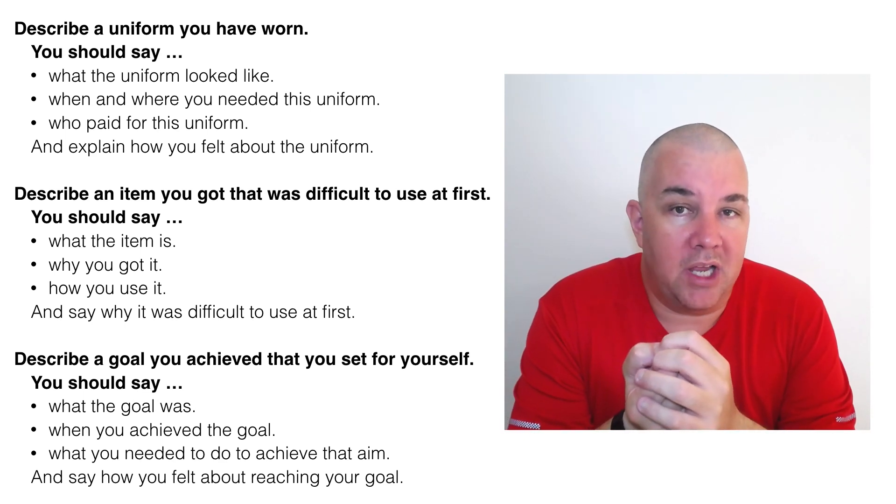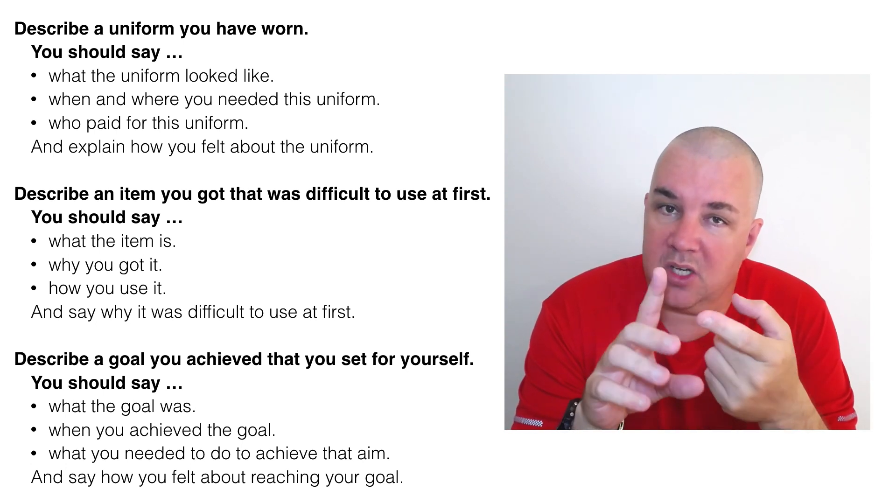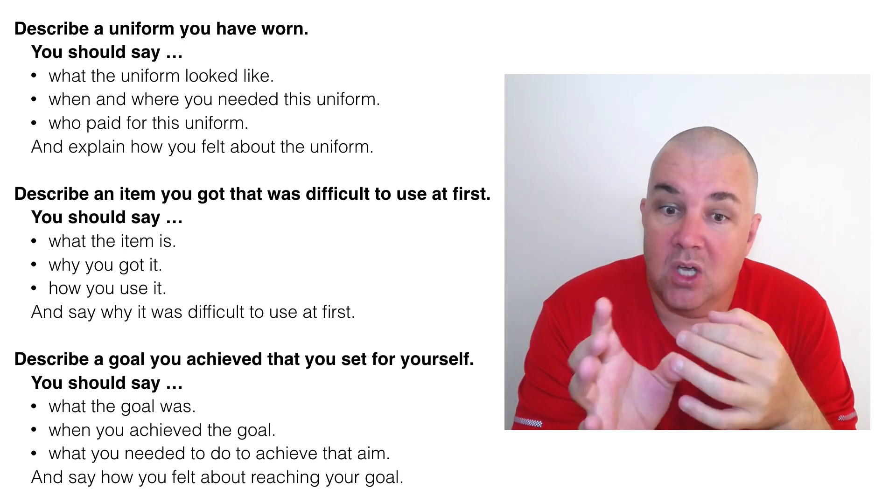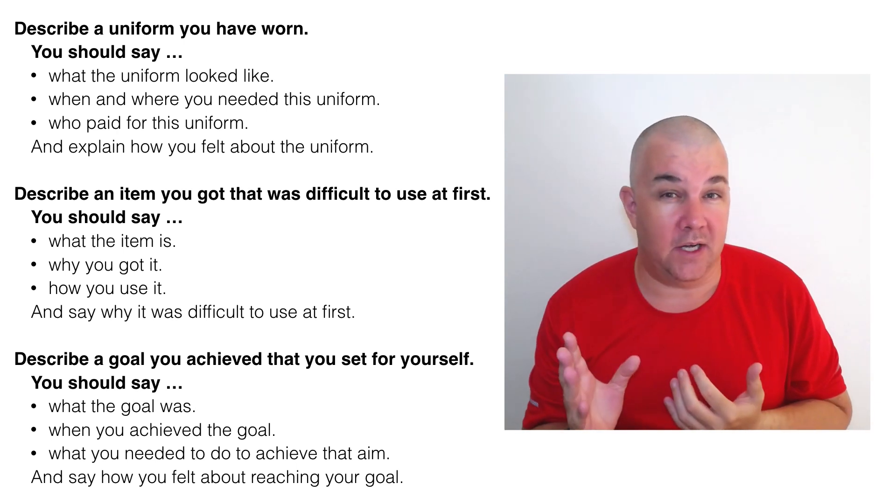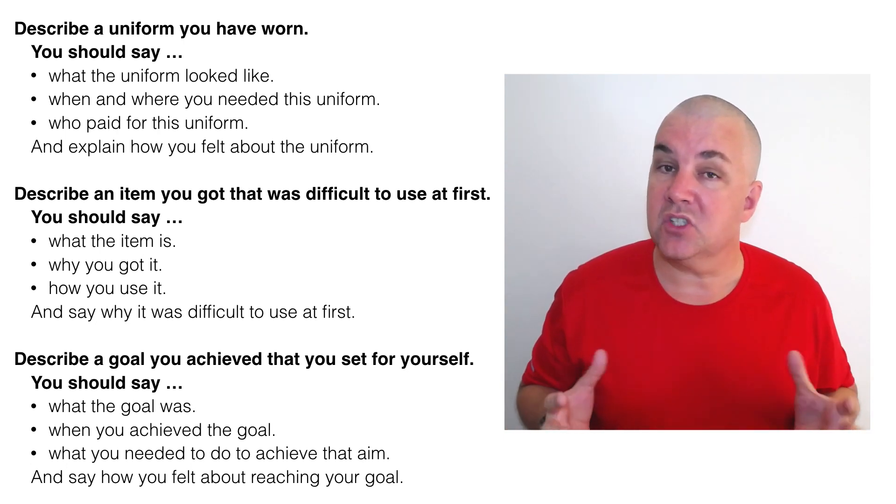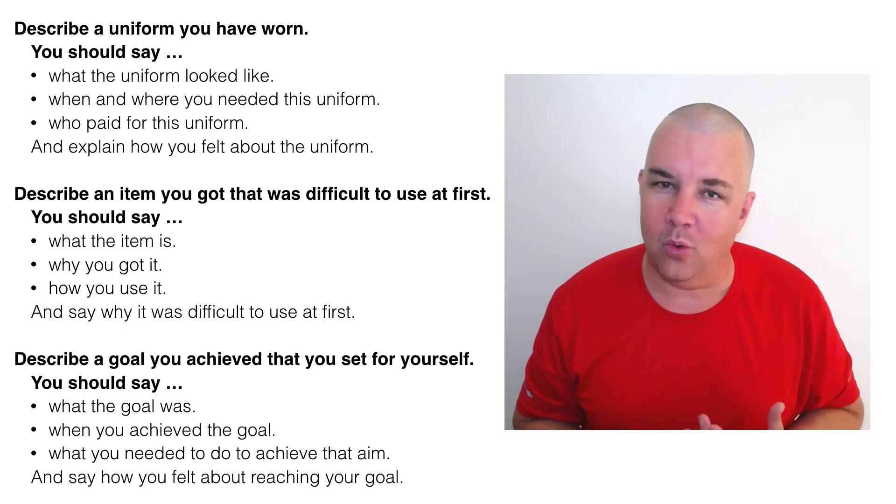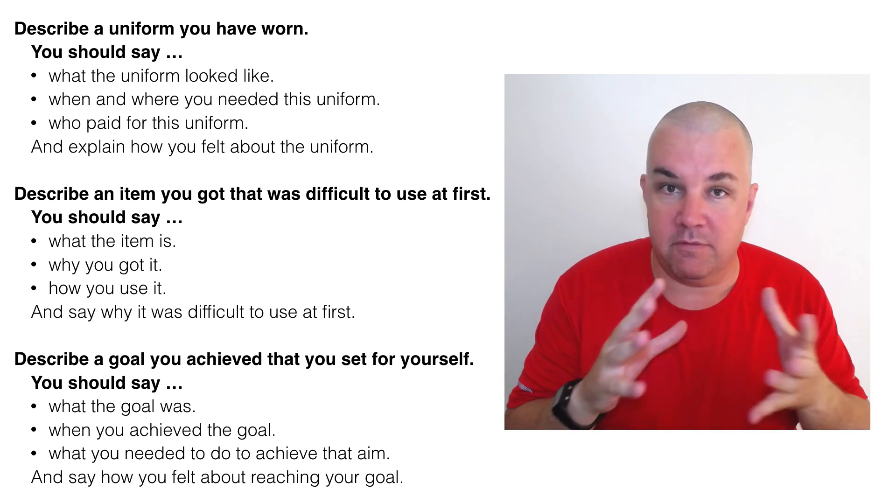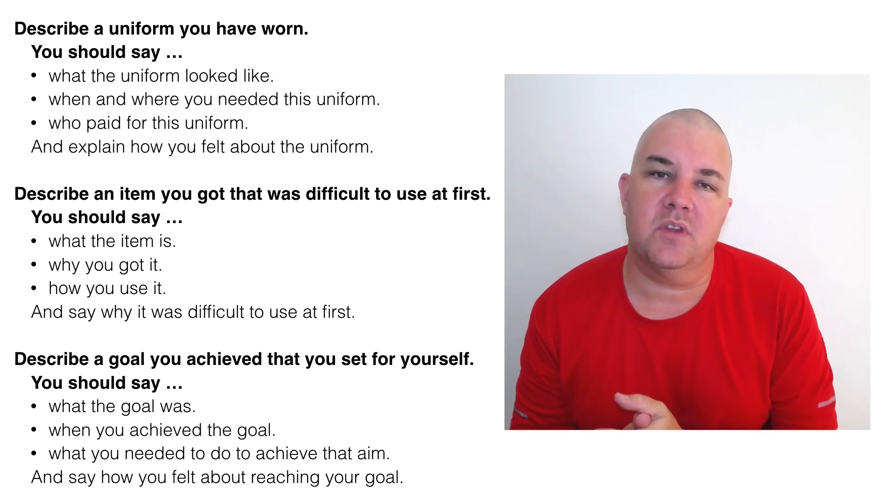So a little bit abstract here. And this will happen with objects. It could be a tangible object, a uniform, an item that was difficult, a gift you received, or it could be an intangible, something you can't touch, a goal, a website. You can't really touch a website. But it's still objects. It's still things that you can describe. What do they look like? What was the goal? Describe that goal. Doesn't look like anything, but it does have aims. It does have certain characteristics.